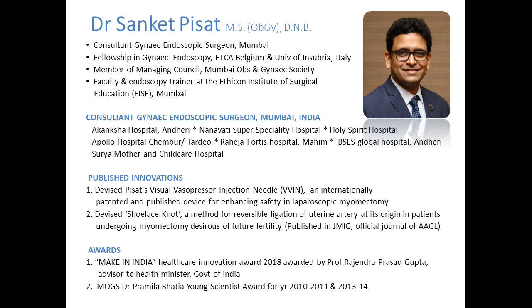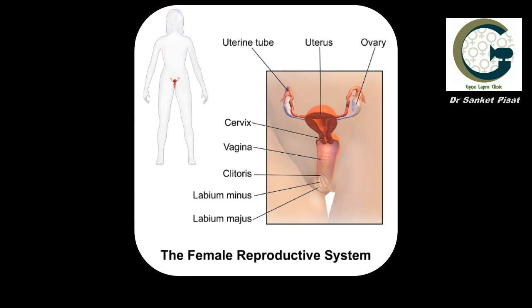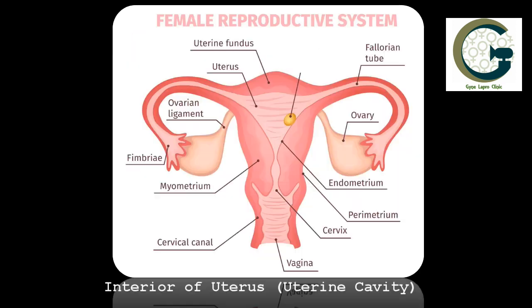The normal female reproductive system consists of the uterus which lies in the center and a pair of fallopian tubes and ovaries, one on each side of the uterus. This uterus is the organ that normally harbors the child and where the pregnancy grows. The uterus has an inner lining which is also referred to in medical terminology as the endometrium.